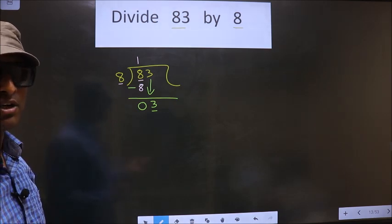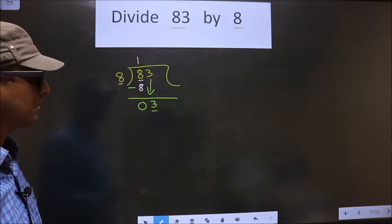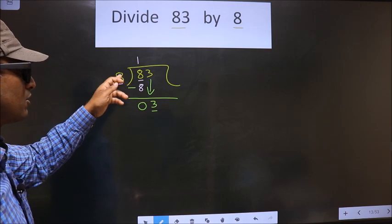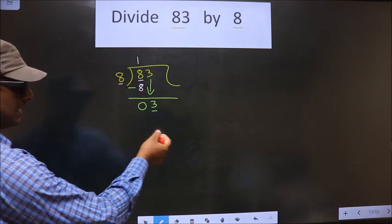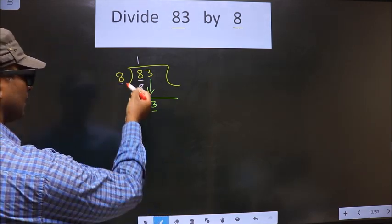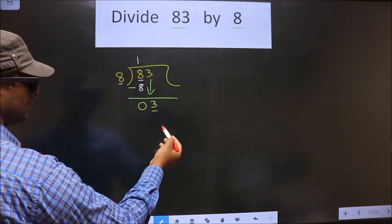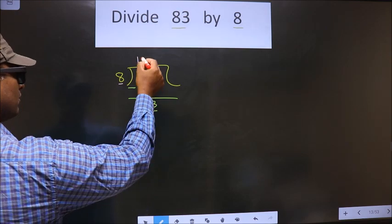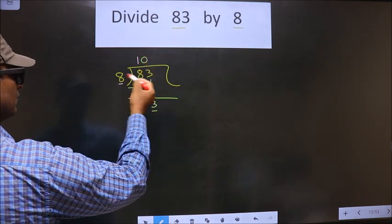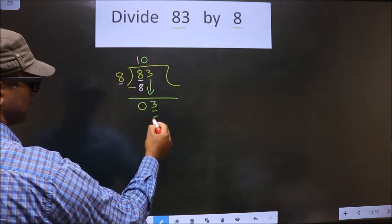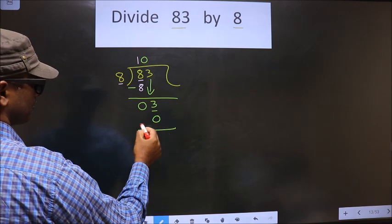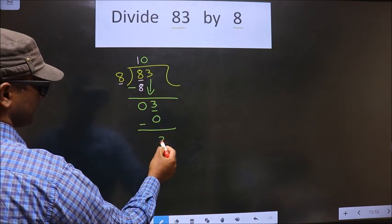Instead, what you should think of is, what should you multiply 8 by to get a number here. If you multiply by 1, you get 8 here. 8 is larger than 3. So what we do is, we multiply by 0. So 8 into 0 is 0. So now you subtract 3 minus 0, which is 3.